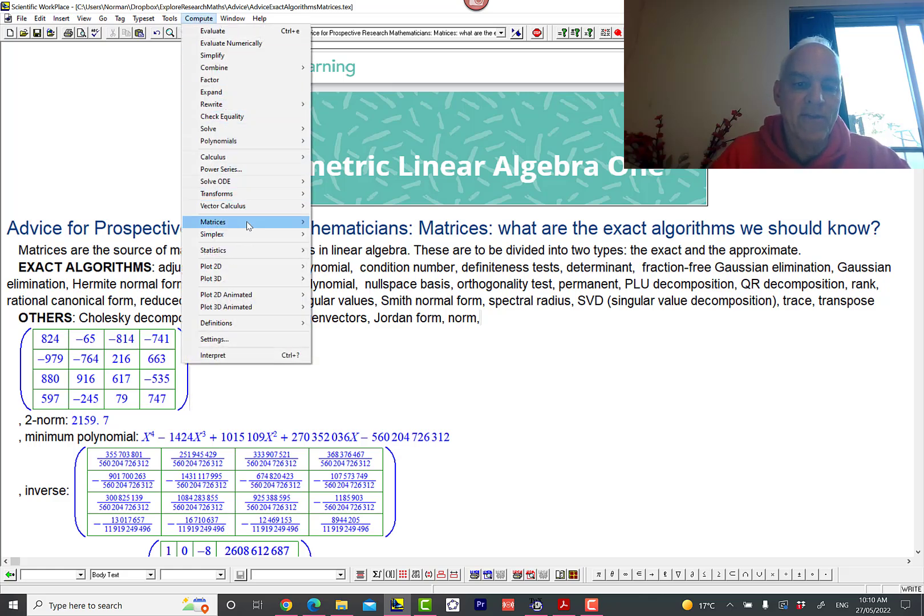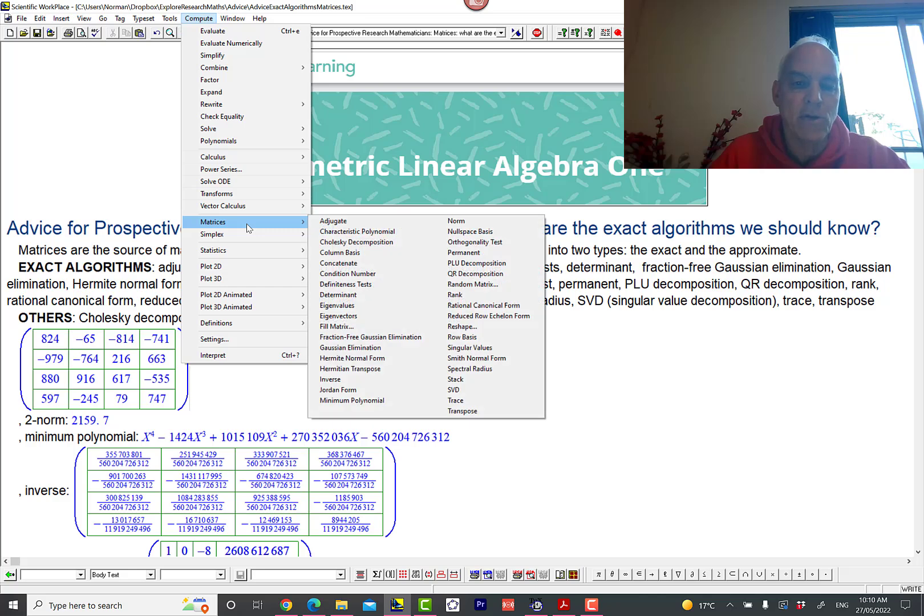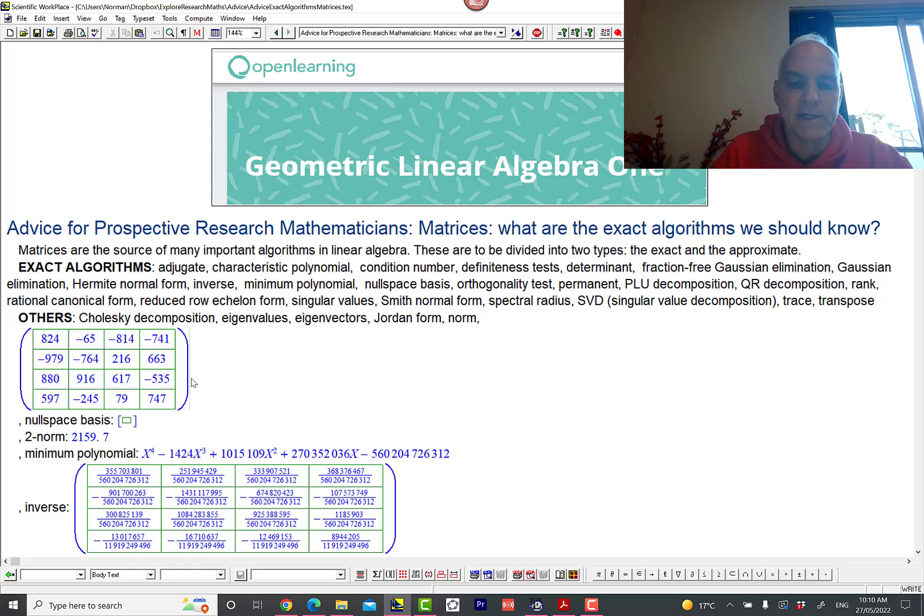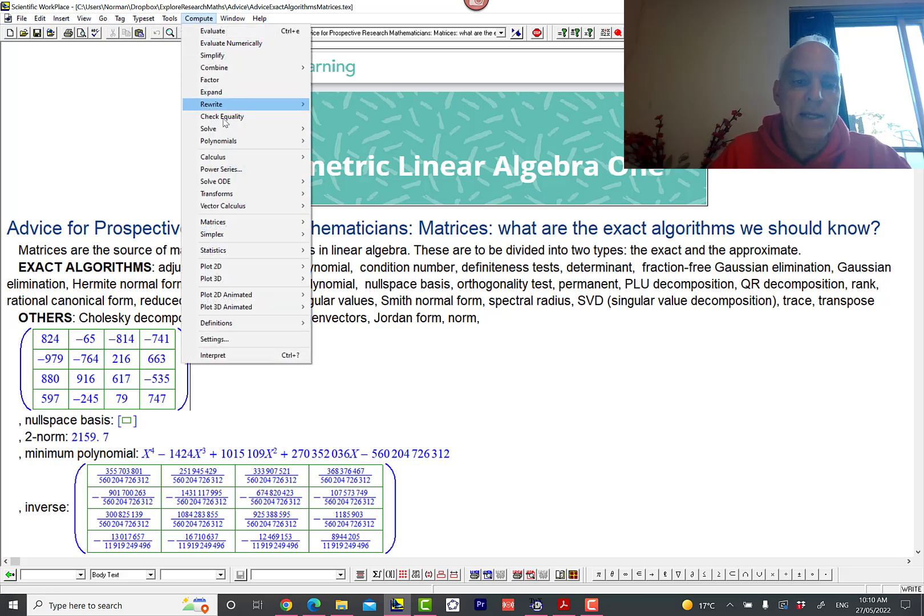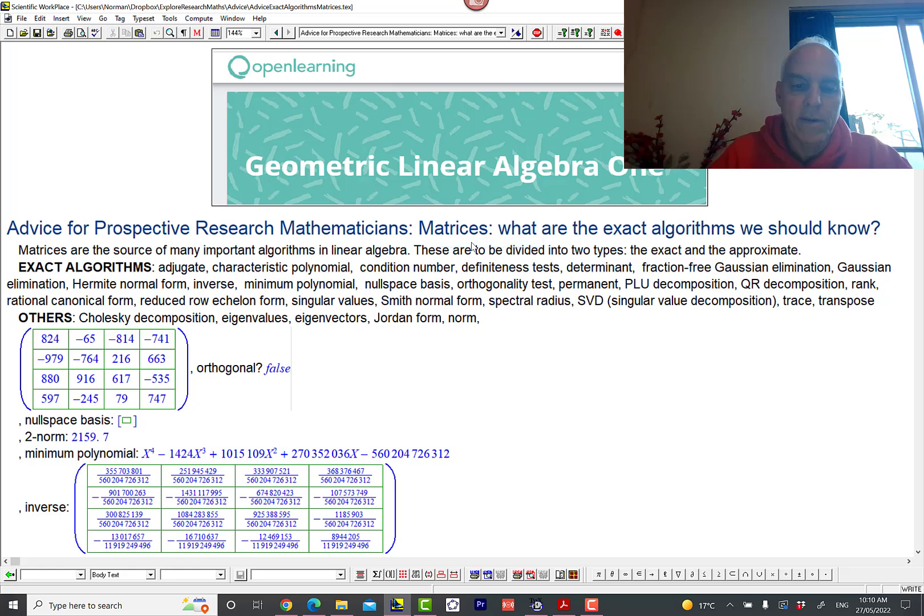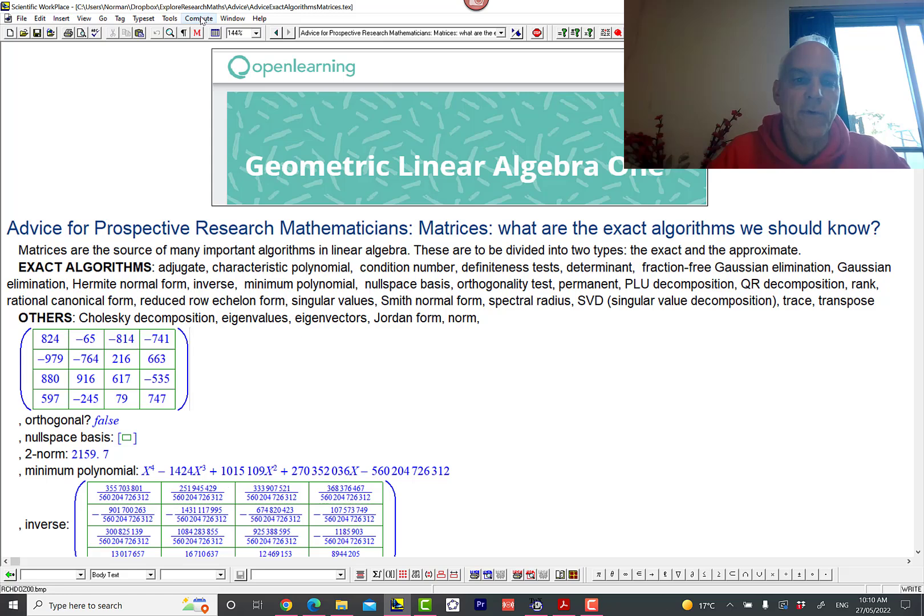Null space—that's basically setting the matrix A, looking at Ax equals zero, and finding a basis for the null space. Now this one here has non-zero determinant so there is no null space, so that doesn't give us anything. But still, it's an exact algorithm. Orthogonality test—it's not an orthogonal matrix. That's clearly exact, just a sort of a yes or no or false or true.